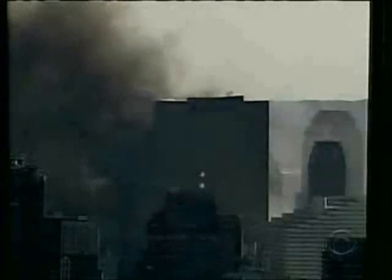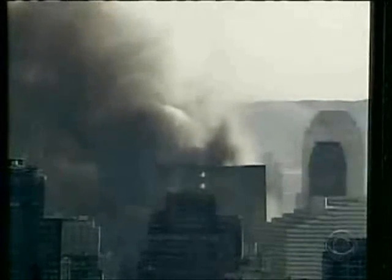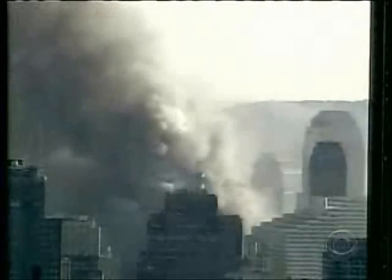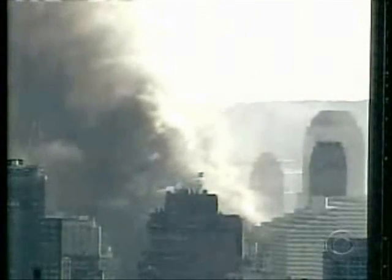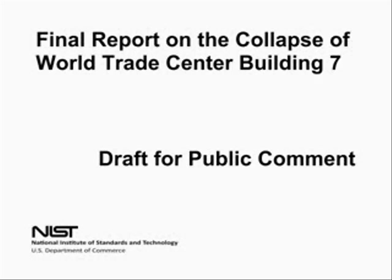This is a revised analysis of the downward acceleration of the World Trade Center Building 7, which collapsed in a manner suggestive of controlled demolition on September 11, 2001. My earlier analysis, posted on YouTube under my own name, was based on the best information I had at the time, but I have now been able to improve on my results using new information available in the recently released NIST Final Report on Building 7.